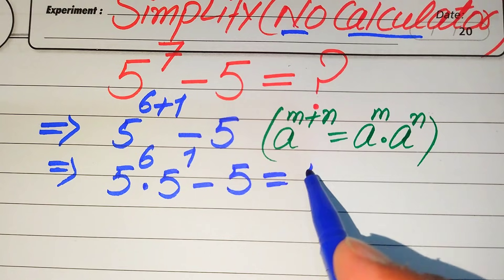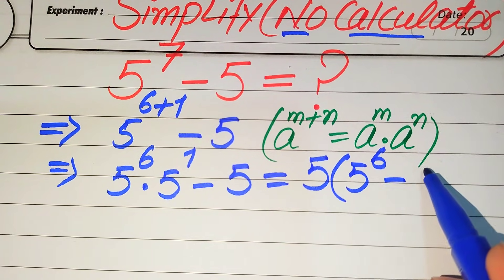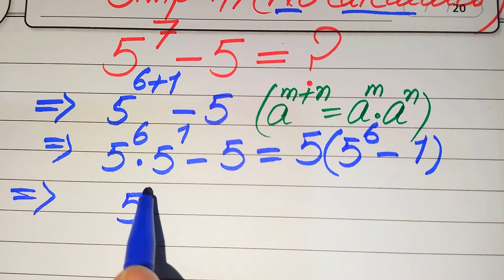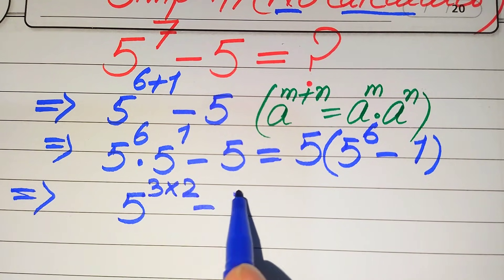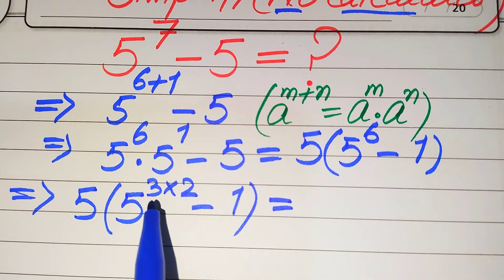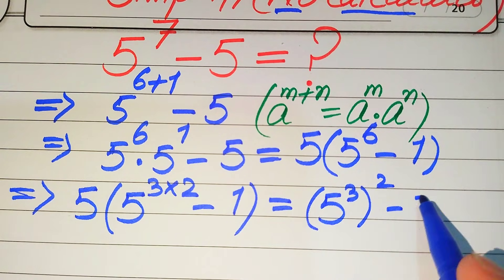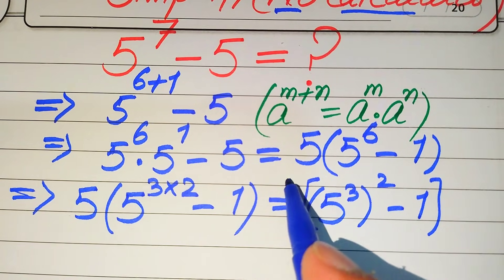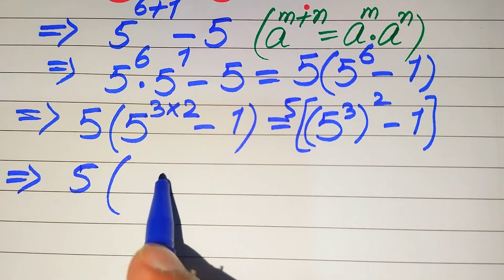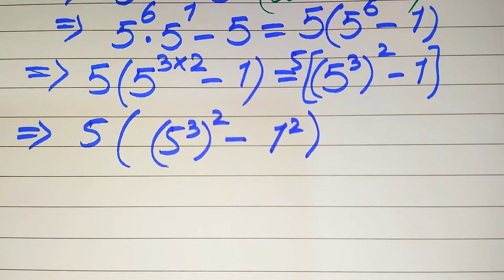Now both terms involve 5, so we take 5 as a common factor, leaving 5 to the power of 6 minus 1. We then rewrite 5 to the power of 6 as 5 to the power of 3, multiplied by 2, minus 1, all multiplied by 5. Using another exponential law, we move the 2 outside, writing it as (5 cubed) squared minus 1, multiplied by 5. We rewrite this as 5 times [(5 cubed) squared minus 1 squared].